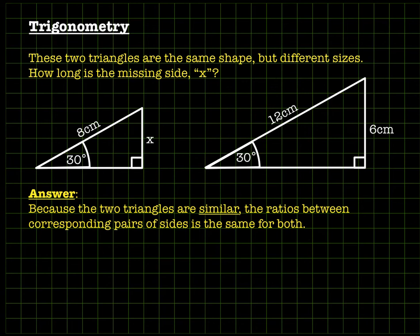Because the triangles are similar, the ratios between corresponding pairs of sides are the same for both triangles. So x divided by 8 in the small triangle should give you the same answer as 6 divided by 12 in the big triangle. So x over 8 equals 6 over 12.